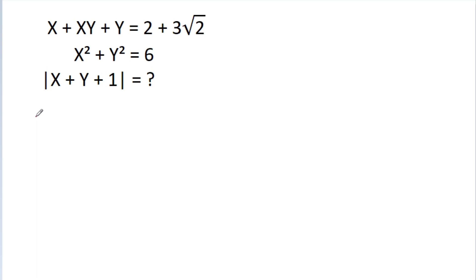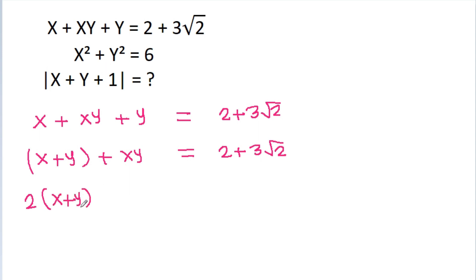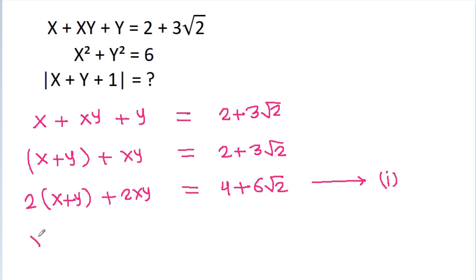We have given that x plus y plus xy is equal to 2 plus 3 root 2. If we multiply both sides by 2, then we will get 2 times x plus y plus 2xy is equal to 4 plus 6 root 2. Suppose this is equation 1, and we have x square plus y square is equal to 6.